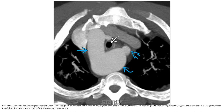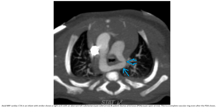MIP CT in a child shows a right aortic arch with an aberrant left subclavian artery with mild tracheal compression. Note the large diverticulum of Kommerell that often forms at the origin of the aberrant subclavian artery. MIP CT in a 20-year-old with stridor shows a right arch with an aberrant left subclavian artery and patent ductus arteriosus — this is a complete vascular ring even after the PDA closes.